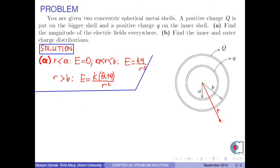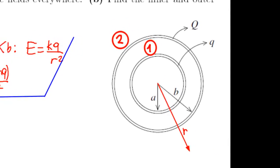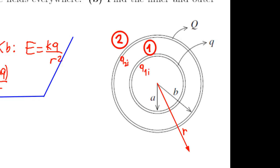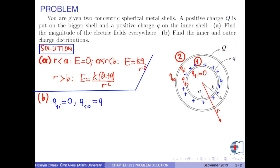Part B: Find the inner and outer charge distributions. If we label the inner and outer shells as 1 and 2, and label the inner surface charge distributions as Q1I and Q2I, and the outer surface charge distributions as Q1O and Q2O — for shell 1, according to the shell theorem, all the charges are distributed through the outer surface. Therefore, Q1I is 0 and Q1O is Q.